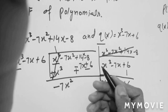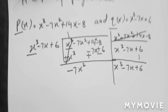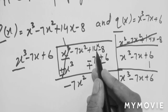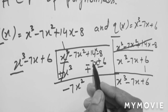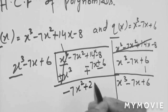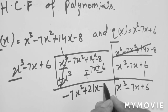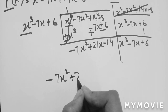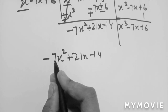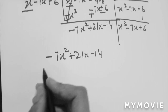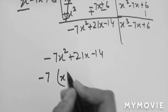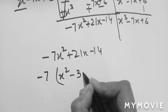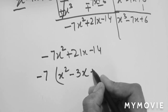After subtraction, x³ minus x³ cancels. For the x terms: 14x is plus and 7x is also plus, so 14x + 7x = 21x. For the constants: plus 8 and plus 6 gives 14. So the remainder is: minus 7x² + 21x - 14. Now we take 7 as common: 7(x² - 3x + 2).